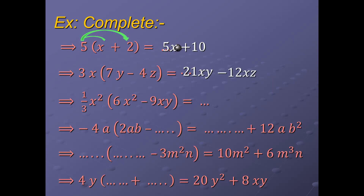Next one: (1/3)x² multiplied by 6x² minus 9xy. As we said before, multiply the monomial with each term of the expression. So we should multiply (1/3)x² times 6x²: (1/3) times 6 equals 2, and x² times x² equals x⁴. Don't forget to add the powers when we multiply x² with x².